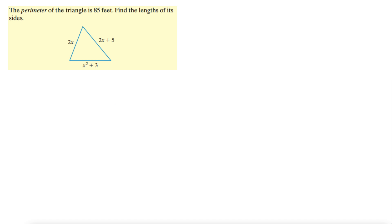This problem says that the perimeter of the triangle is 85 feet. Find the lengths of its sides. So remember for any triangle, let's just draw an arbitrary triangle here with sides A, B, and C. The perimeter is just the sum of those three sides: A plus B plus C.